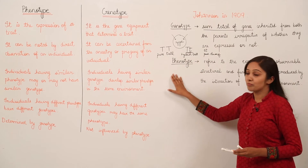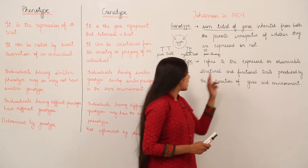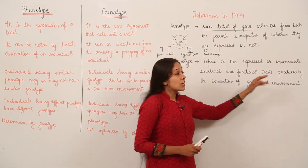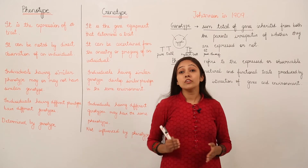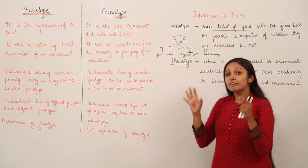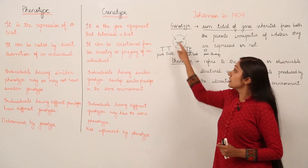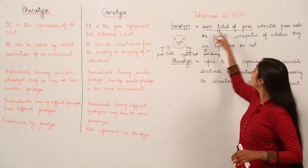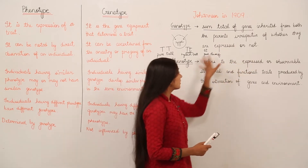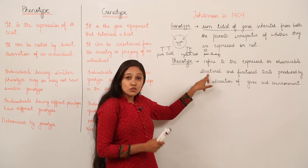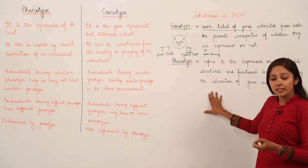Now let us start with phenotype. What is a phenotype? It refers to the expressed or observable structural and functional traits produced by the interaction of genes and environment. In simpler terms, phenotype is whatever you are observing with your eyes — whatever you are going to see. For example, if you see a tall pea plant, that tallness is the phenotype. But the genotype is what encodes and explains the genes.